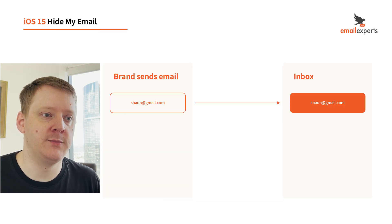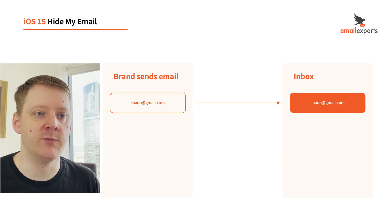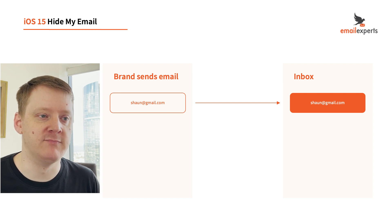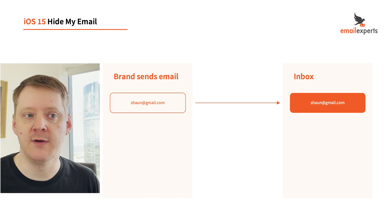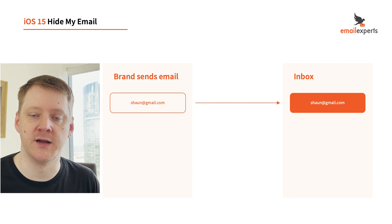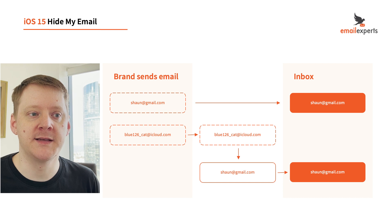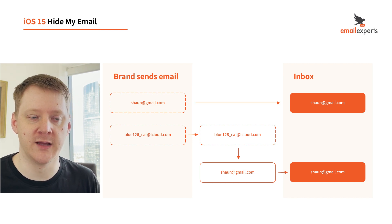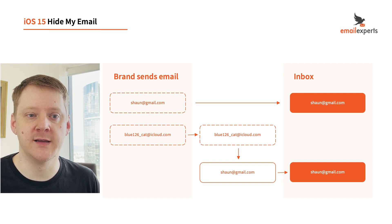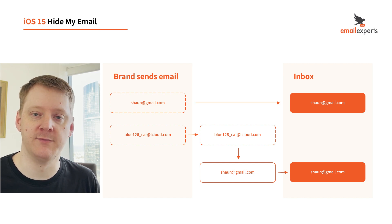So in this example, when I use my email address, the brand that I sign up to has that email address. And if they suffer a database breach, the email addresses, including my own, will get into the wrong hands and I could end up being spammed. Hide My Email makes an intermediate email address that forwards to my real email address, and the brand won't have my personal email address directly. If I start getting spam, I can delete the forwarding address in my phone settings.